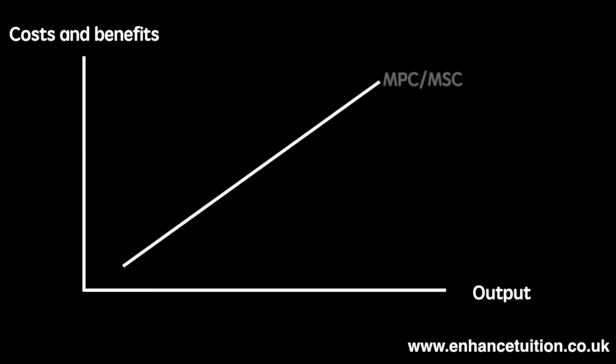Now let's look at the diagram. Costs and benefits are on the y-axis, output on the x. Our marginal private cost and marginal social cost are the same here because we assume there are no external costs in production. The marginal private benefit curve represents the benefit gained by the additional consumption of a good or service to the individual.